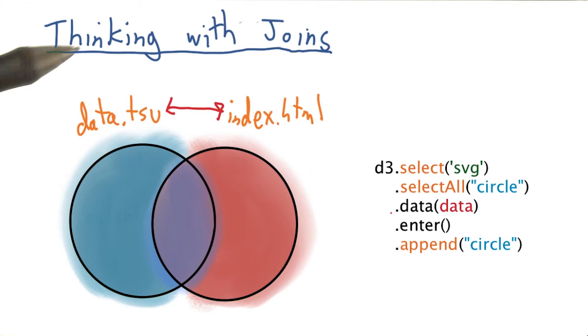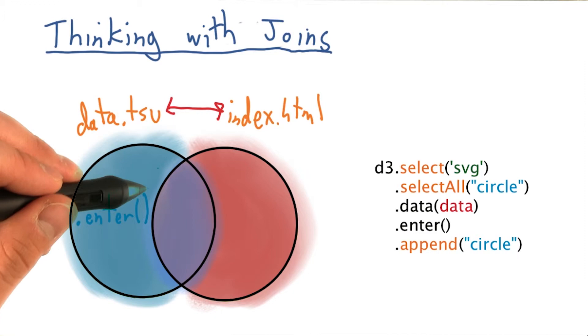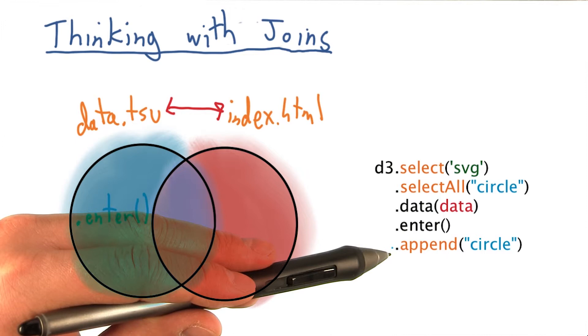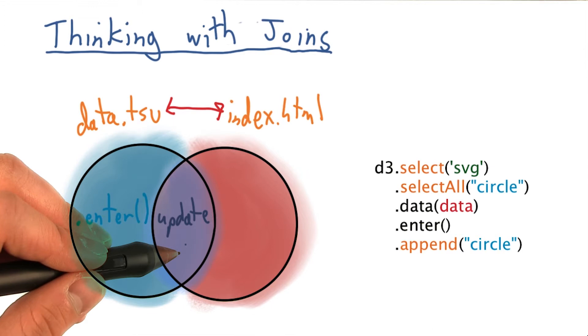And knowing what I've mentioned about the dot enter selection, everything in this blue corresponds to all the rows of our data that are not yet present on our web page, which we will then add elements to a web page for each one. The purple can be thought of as the update selection.